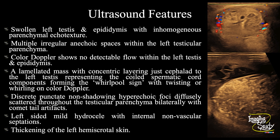In summary, the left testis and epididymis are swollen with inhomogeneous parenchymal echotexture. Multiple irregular anechoic cystic spaces are seen within the left testicular parenchyma. Color Doppler shows no definite vascularity or detectable flow within the left testis and epididymis. There is a lamellated mass with concentric layering just cephalad to the left testis representing coiled spermatic cord components forming the whirlpool sign on color Doppler. Discrete punctate non-shadowing echogenic foci are seen diffusely scattered throughout the bilateral testicular parenchyma with comet-tail artifacts indicating testicular microlithiasis. There is also left-sided mild hydrocele with internal non-vascular septations, and left hemiscrotal skin is thickened. These features conclude this as a case of left testicular early sub-acute torsion with reactionary hydrocele and bilateral grade 3 or diffuse testicular microlithiasis.